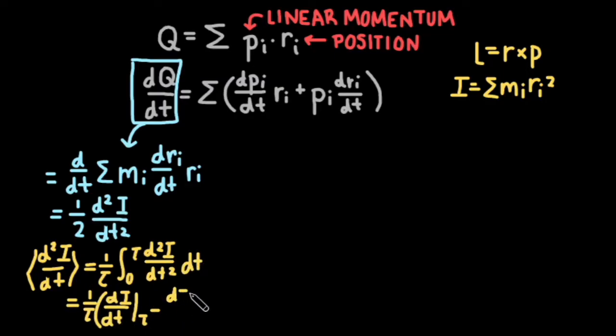Note that for orbital motion, di dt at tau is the same as di dt at zero, and so these two terms cancel out. The left-hand side of our equation is now just zero. Yay!